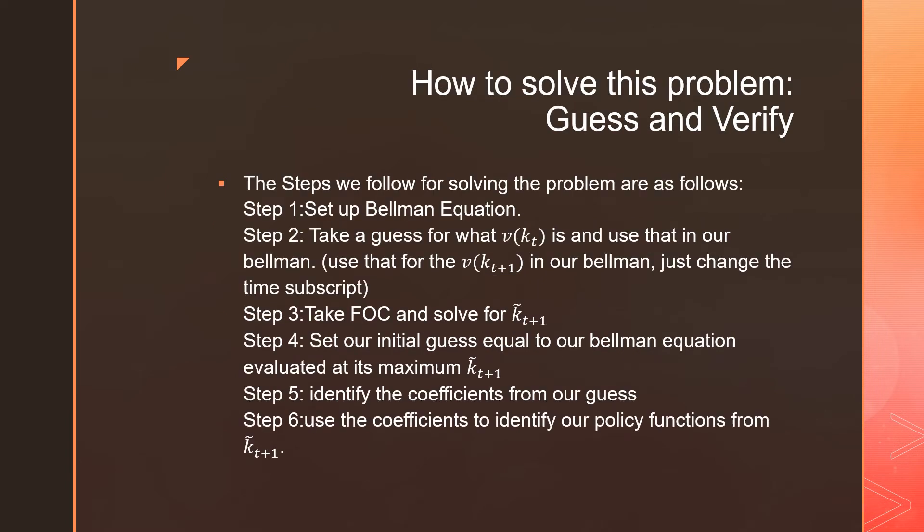So we're going to solve this problem using guess and verify. Step number one, we're going to set up the Bellman equation. Step number two, we're going to take a guess for what our value function V of K is and use that in our Bellman, just changing the subscript for V(K_{t+1}) and plugging that guess in there. Step number three, we're going to take our first order condition and solve for our intermediate K_{T+1} equation. Step number four is we're going to take our initial guess and set it equal to our Bellman equation evaluated at its maximum, which is our intermediate value K_{T+1} star. And step number five is we're going to identify the coefficients from our guess. And step number six is that we're going to use the coefficients to identify our policy functions from K_{T+1} tilde.